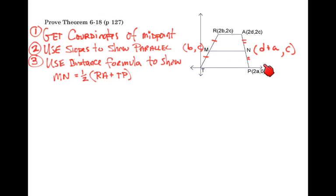Looking at this, I see the same y-coordinates, c and c. I can already show this is parallel because it's a horizontal line and the others are horizontal lines. But let's go through the mechanics. We figure out the slopes, the rise and run. Since it's the same y value,